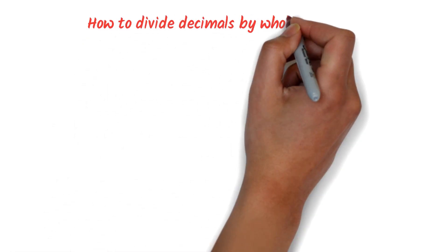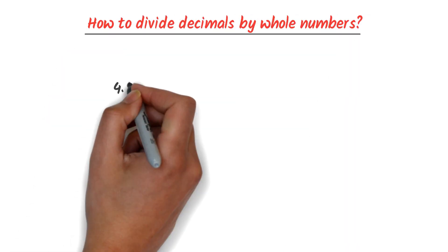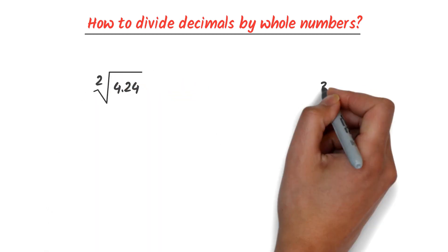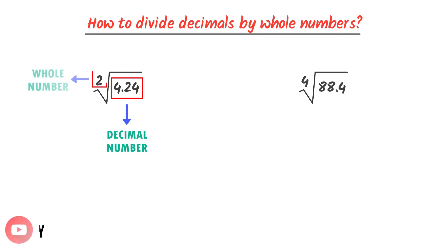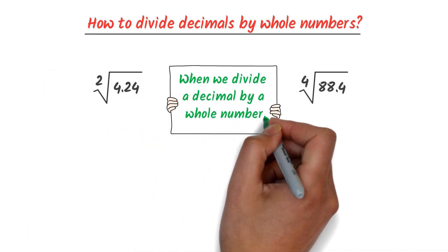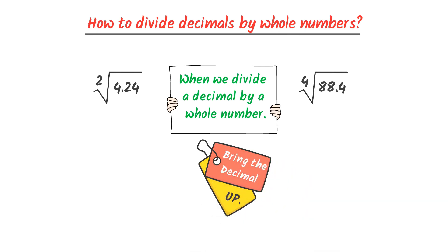How to divide decimals by whole numbers? Consider 4.24 divided by 2, and 88.4 divided by 4. We know that 4.24 is a decimal number and 2 is a whole number. Remember that when we divide a decimal by a whole number, we always bring the decimal straight up.